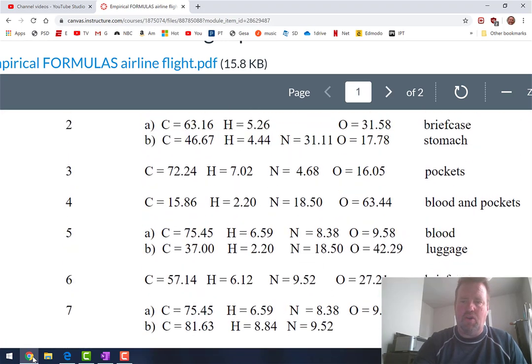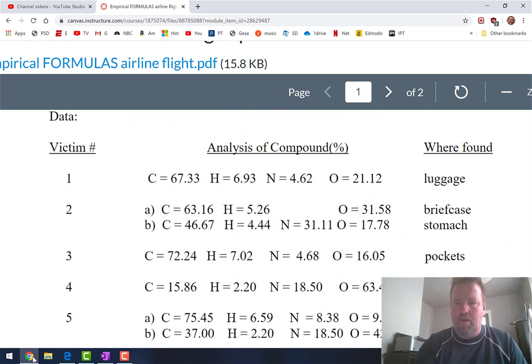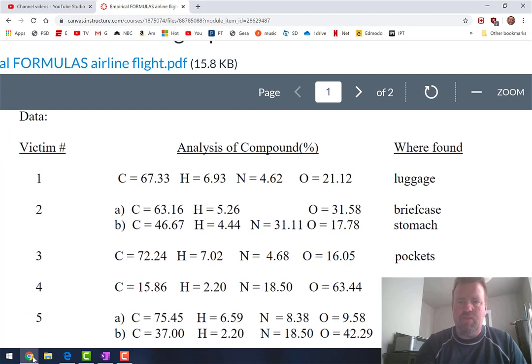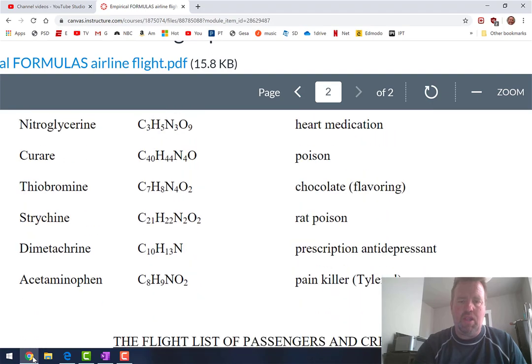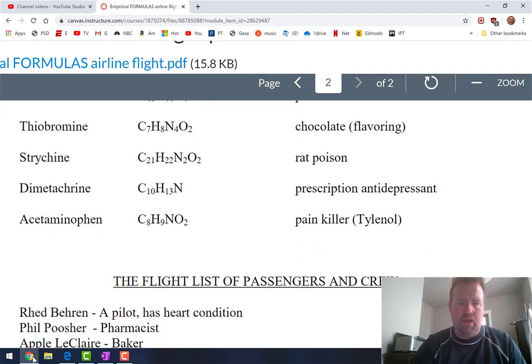C17H21NO4, which is the chemical formula of cocaine, which is an illegal narcotic drug. And this person had cocaine in their luggage.